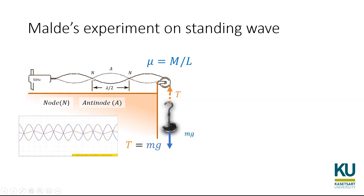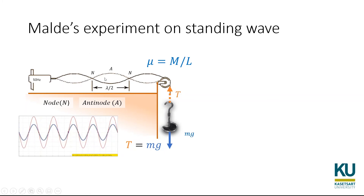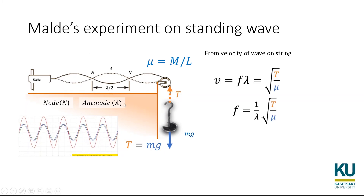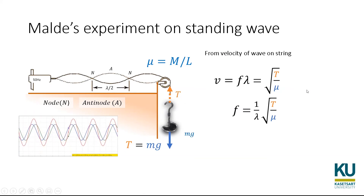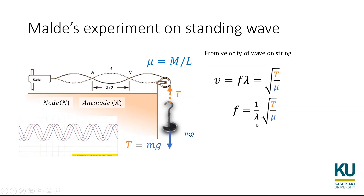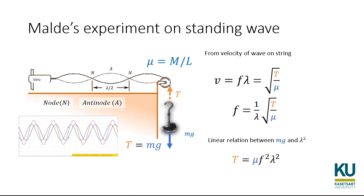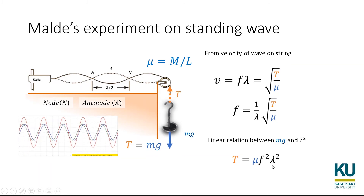The distance from node to node we can count as half of the wavelength, or λ/2. By this information, we can define what the wavelength is. You know the velocity from the derived part, then convert to frequency which leads to the wavelength. You can adjust the tension and adjust the linear density. This is the final relation — you rearrange the term, square it up, and move it to the other side.